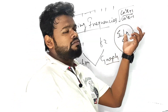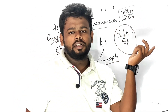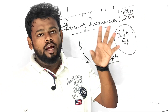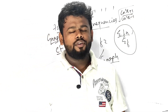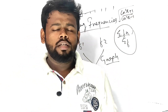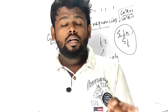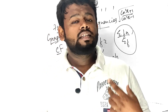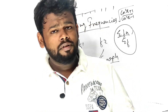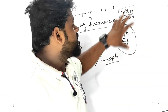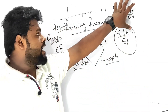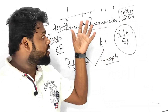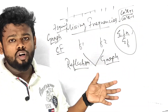After rationalizing, you need to know all the standard degree values: 30°, 45°, 60°, and 90°. These are things you must remember. These are top questions and you need to know them thoroughly.